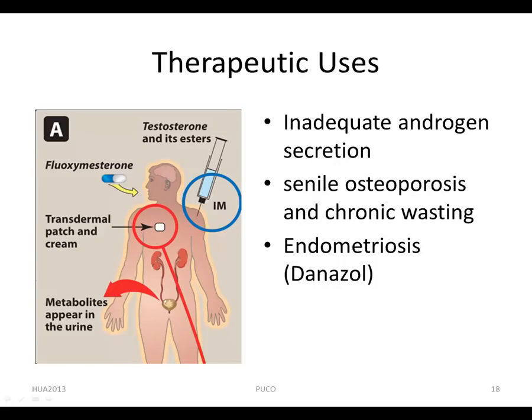Androgenic steroids are used for males with inadequate androgen secretion. Anabolic steroids can be used to treat senile osteoporosis and chronic wasting associated with HIV or cancer. Danazole, a mild androgen, is used in the treatment of endometriosis, ectopic growth of the endometrium, and fibrocystic breast tissue.